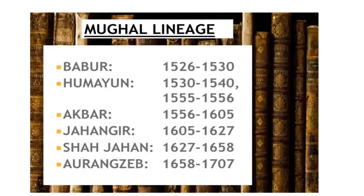Here is the list of some Mughal rulers who ruled over the Indian subcontinent. The first was Babur, who ruled from 1526 to 1530. After that Humayun came — he ruled from 1530 to 1540.